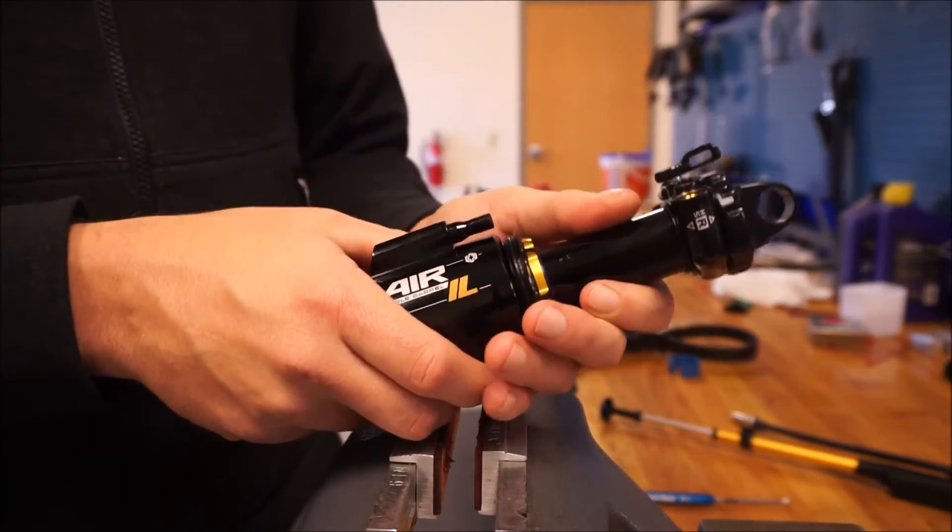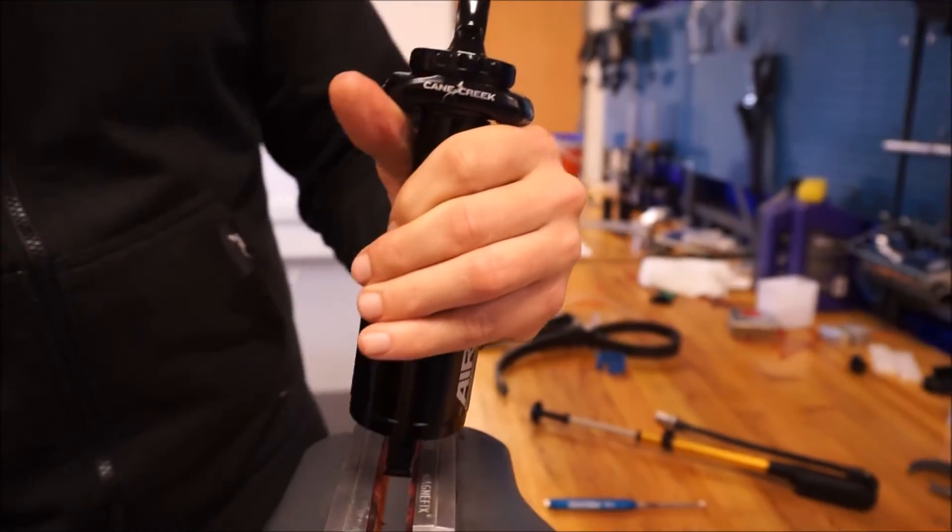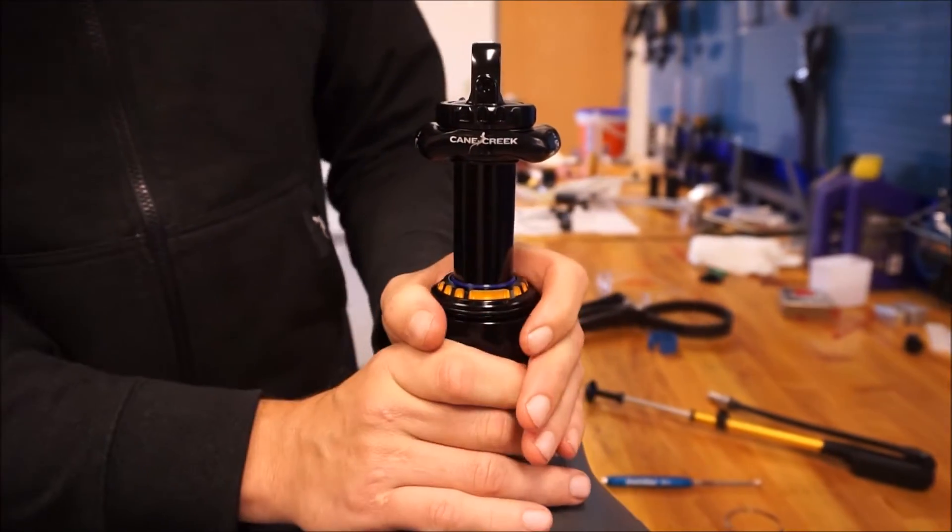And from here you do not have to pull the can all the way. There's two sets of O-rings, so you're going to pull it over the second set gently.